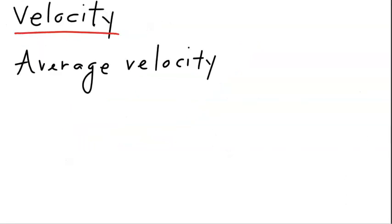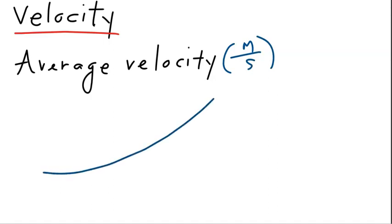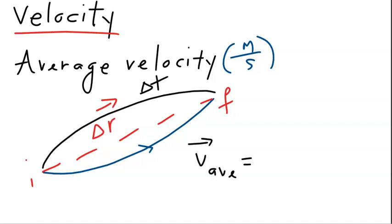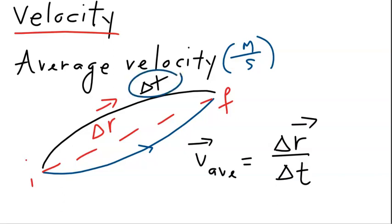Average velocity is a vectorial quantity measured in the unit of meters per second. Going back to the motion of an object on a plane with a displacement of delta r — this is the initial point, this is the final point, and that is the displacement vector. The average velocity for this motion is the displacement over the time it takes to accomplish that displacement. Delta t is the time it takes, and the unit is meters per second.